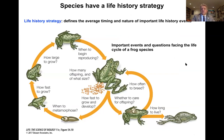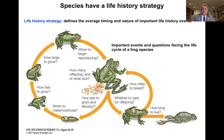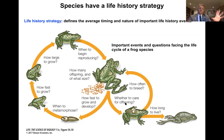Species have a life history strategy. Illustrated with the classic frog-tadpole life cycle, at different stages lineages and populations face evolutionary challenges reflected in the timing of events: how fast frog eggs develop, when the frog metamorphoses, how fast and large individuals grow, when they begin reproducing, how often they reproduce, and whether they provide parental care. Strategies can be thought of as the average timing and nature of these important life history events.